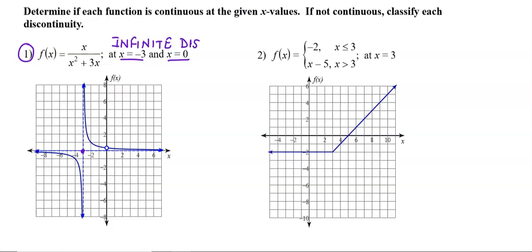The function is not continuous at -3 — we have infinite discontinuity. Then at x = 0, you can see the origin, and there is a hollow circle in the graph. That is called a removable discontinuity. We give this name because this discontinuity can be removed by putting certain conditions. Wherever you get a hole in the graph, that is called a removable discontinuity.